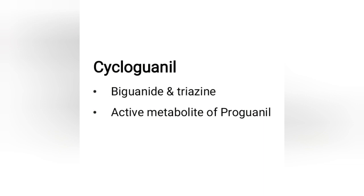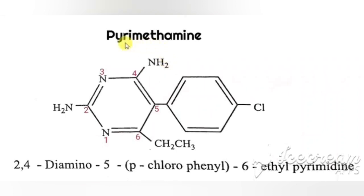Cycloguanil is a biguanide with a triazine nucleus and is the active metabolite of proguanil. The next drug is pyrimethamine. From its name, we can identify three components: a pyrimidine nucleus, an ethyl group, and an amine group.